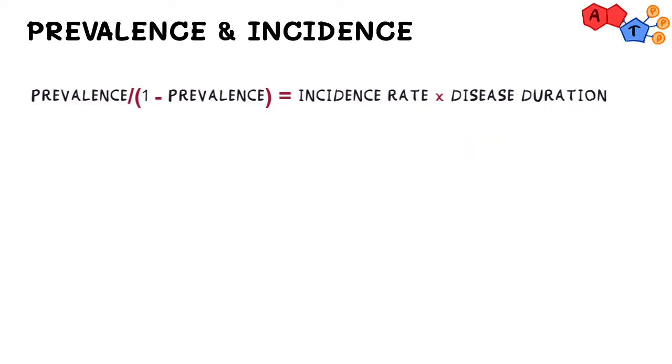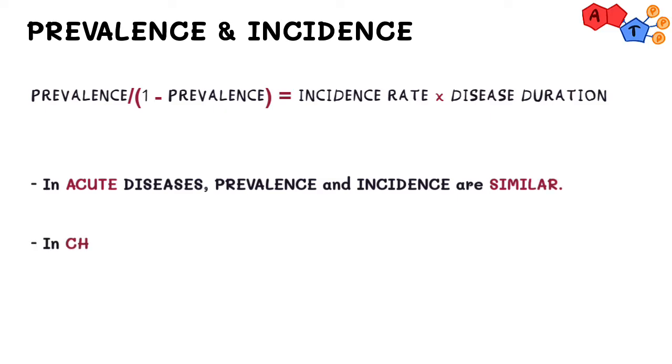This formula can be used to calculate, but more importantly it shows this relationship where acute diseases present a situation in which prevalence and incidence become very similar. However, chronic diseases present a situation in which the prevalence is higher than the incidence.